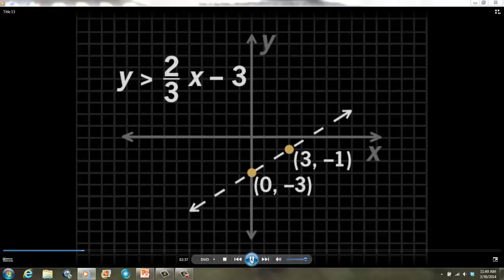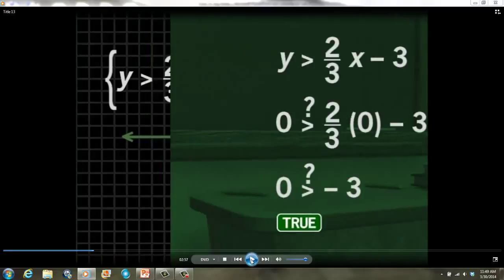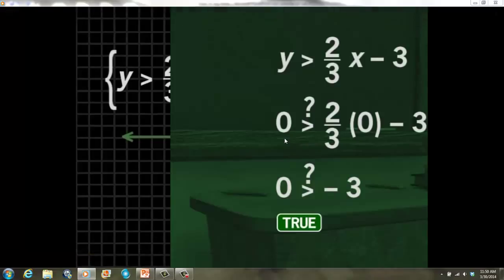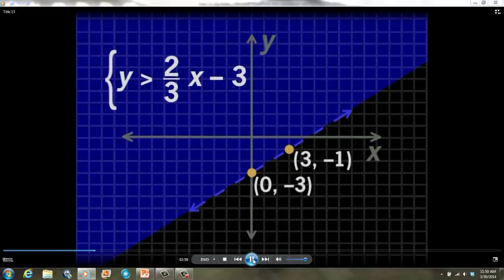What about the shading on the graph — where does that go? To decide whether to shade above or below the line, choose a test point. We'll use (0, 0) and see whether it makes the inequality true. Since 0 is greater than 0 minus 3, the point (0, 0) is in the solution set. They substituted x = 0 and y = 0, simplified, and got 0 is greater than negative 3, which is true. Thus, (0, 0) is part of the solution. That means we shade on the same side as the test point — that's the region that contains (0, 0).